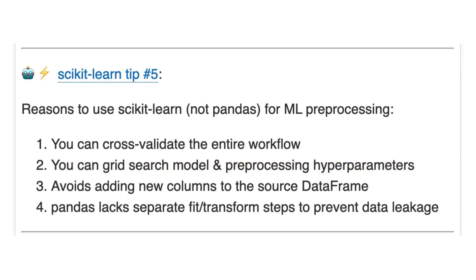Reason number three: avoids adding new columns to the source dataframe. If you were doing dummy encoding using pandas and the column you're encoding contains 20 categories, you're going to get 20 new dataframe columns. That's super inefficient in terms of space, and it makes the dataframe harder to explore when you keep adding more and more columns. Instead, I recommend using ColumnTransformer, which allows you to not affect the source dataframe.